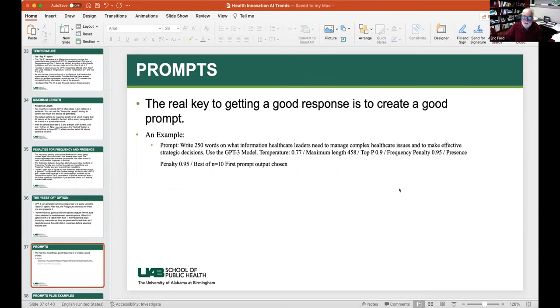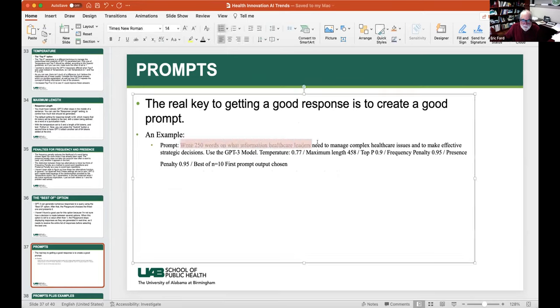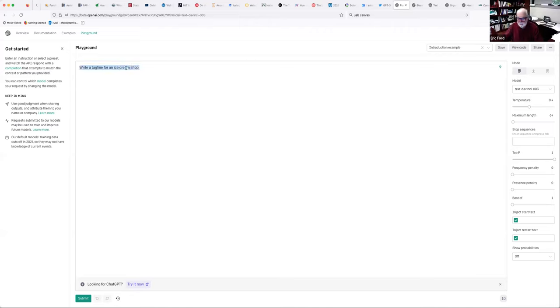So what are we going to do? The most important part of any GPT-3 entry is the prompt. And here I've given you an example. This is the prompt part here. And I told it to write 250 words on what information healthcare leaders need to manage healthcare issues and to make effective strategic decisions. So I'm going to copy that. I'm going to stop sharing here. I'm going to start sharing Firefox. And I'm going into GPT-3. This is the OpenAI. And I am in the API for GPT-3. And I'll type in that same prompt.